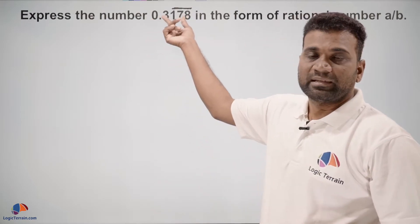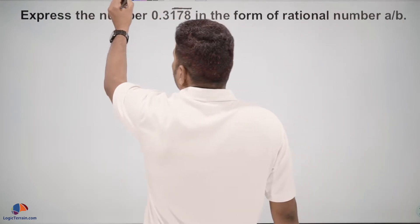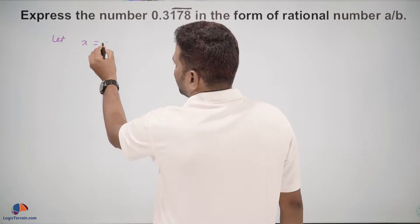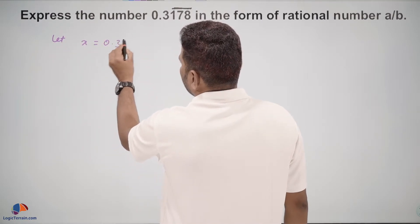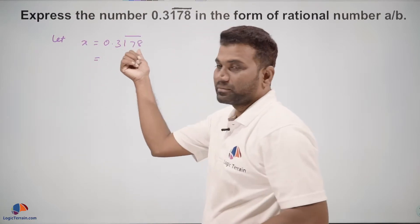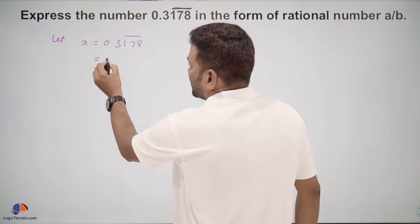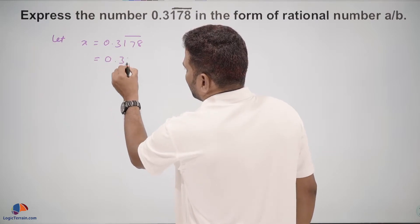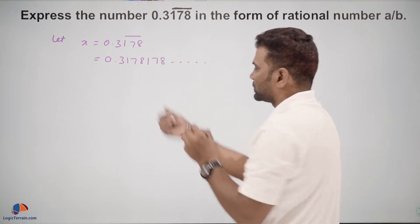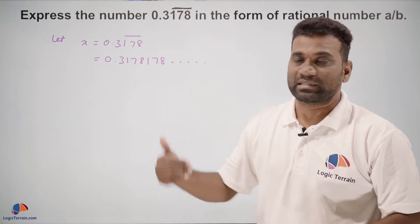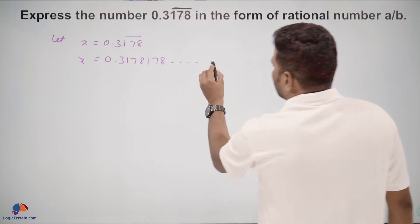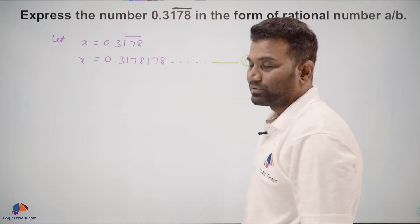So let the given number be x. Let x equal to 0.3178 bar, which is nothing but 0.3178178 and so on — so 178 is repeating continuously. So this is equation number 1.